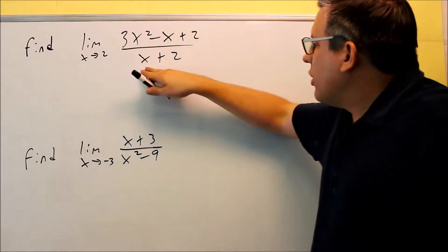So if I put 2 in here, I'm not going to be dividing by 0 at all. So because of that, I can just put the number in directly. I'm going to put it in for all the x's, top and bottom. And when I do that, since I'm not dividing by 0, I can go ahead and get the answer.